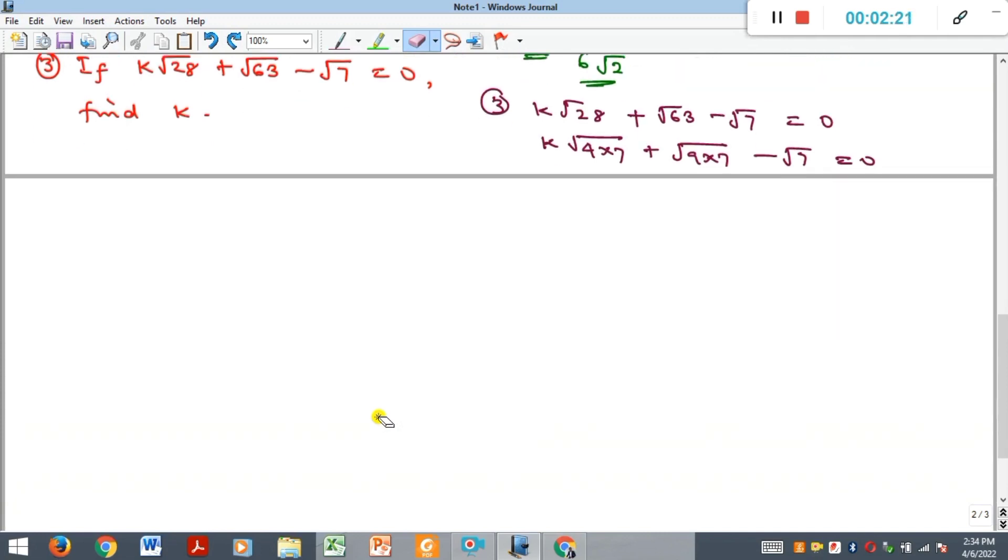So the next thing we are going to have here now is we are going to now bring out the perfect squares from the square root. And if we bring out, from there, we have 4, we are going to bring out 2, and the 2 will multiply the k. So we'll get 2k√7 is now left. And then under here, we'll have 3 will come out, root of 7, then minus root 7. And that is equal to what?